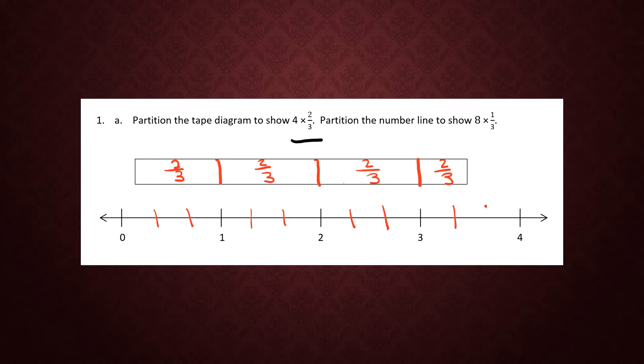I'm going to add 2 extra lines in between each whole number. I'm not adding 3 lines because the third line would be the whole number. So for example, we have 1 third, 2 thirds, and 3 thirds is our whole.